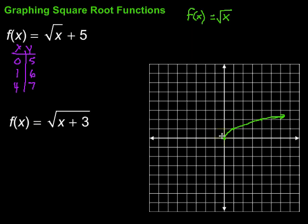We go, first of all, x equals zero, and that's at five. So one, two, three, four, five. Then one, six. So over one, up six. And then over four, up seven. So over four, up seven.